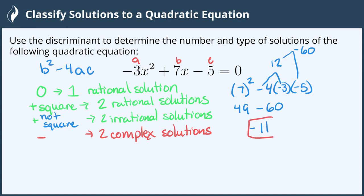If we end up with a negative, this tells us that the solutions we will get if we were to solve this quadratic equation would be two complex solutions, meaning it would have an imaginary number. So our answer is two complex solutions and we're all done.